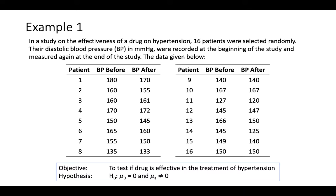Here is an example of a paired sample T observation. We want to study drug effectiveness. Sixteen patients were selected randomly. Their blood pressure was recorded at the beginning of the study and also at the end — that's before and after. You have 16 respondents, but 32 observations because of before and after. The objective is to test if the drug is effective in the treatment of hypertension.